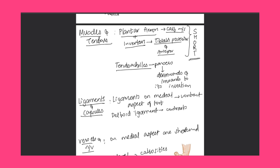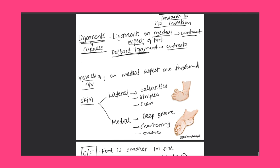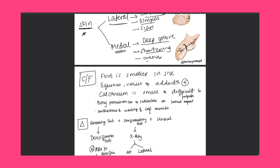The Achilles tendon is contracted and passes downwards and inwards to its insertion, leading to equinus deformity. Ligaments on the medial aspect of the foot are contracted; the deltoid ligament has special mention as it also contracts. Vessels and nerves on the medial aspect are shortened. Skin changes: laterally we see callosities, dimples, and scars; medially we see deep groove, shortening, and creases.